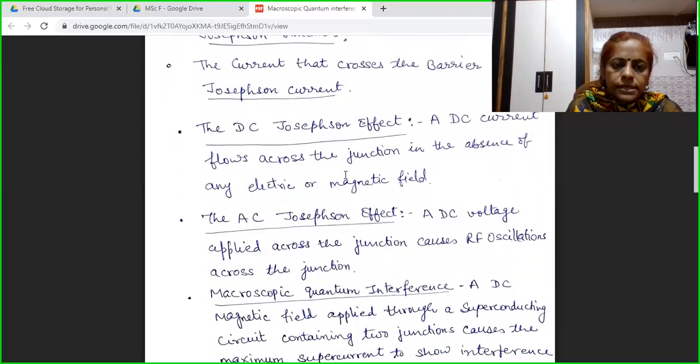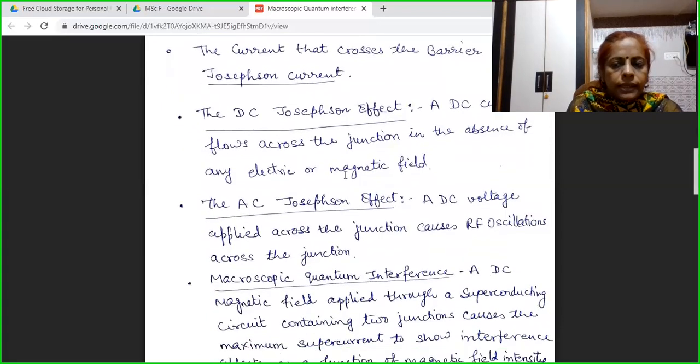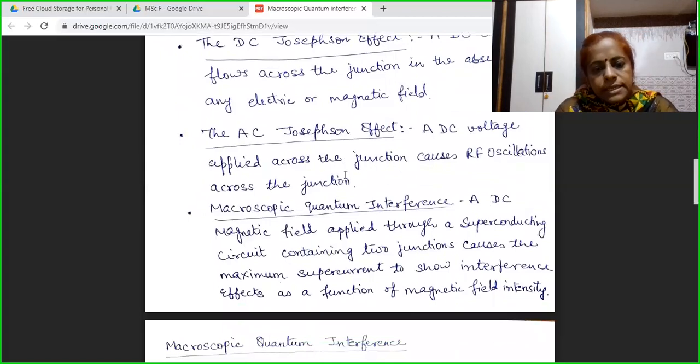Based on these two effects and Josephson effect, there is one more effect which we will discuss in detail today. This effect is known as macroscopic quantum interference. We will take two junctions. As in DC and AC, we have simply two superconductors separated by insulating layer. But in this case, that is macroscopic quantum interference, we will take two such type of junctions and we will show that due to interference effect, the output has a current.